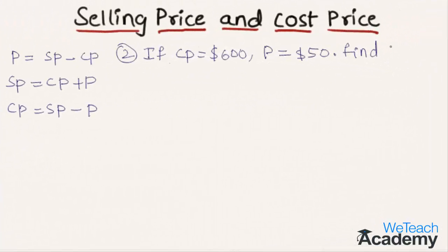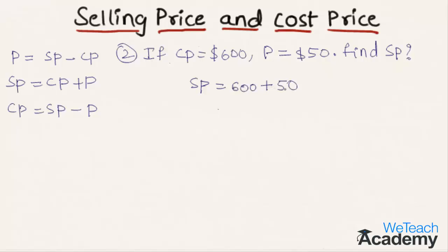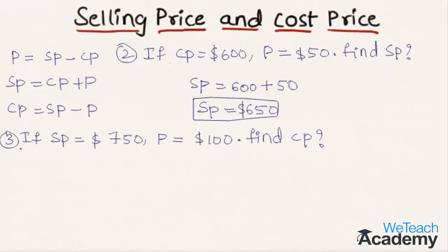Let us solve another example. If cost price is $600 and profit is $50, we have to find the selling price. By substituting in the formula — Selling Price = Cost Price + Profit — we get $600 plus $50. By adding, we get the selling price as $650.